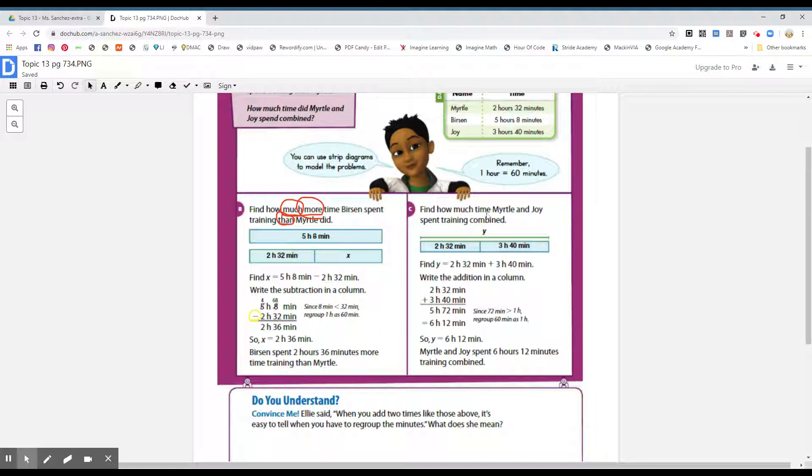Find how much time Myrtle and Joy spent training combined. Boys and girls, if they're asking you for combined, what do you think the operation would be here, boys and girls, combined? If you said add, good job, we're putting them together. That's why you see the strip diagram where both of the numbers are on one strip diagram, they want to put them together.